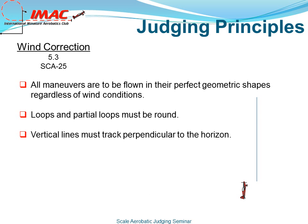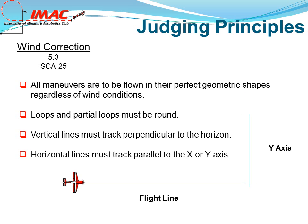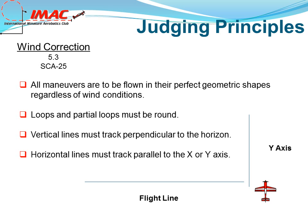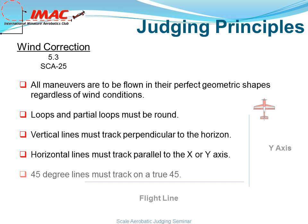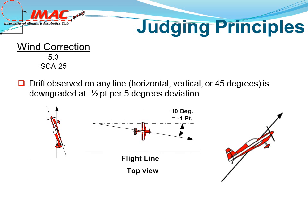Vertical lines must track perpendicular to the horizon. Horizontal lines must track parallel to the x or the y axis. 45-degree lines must track on a true 45. Drift observed on any line — horizontal, vertical, or 45 degrees — is downgraded at half a point per 5 degrees of deviation.